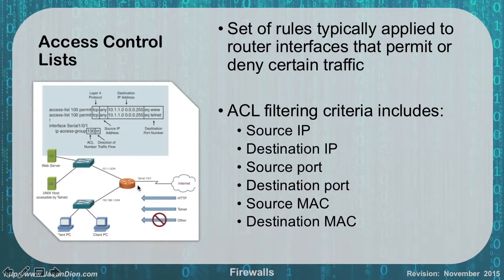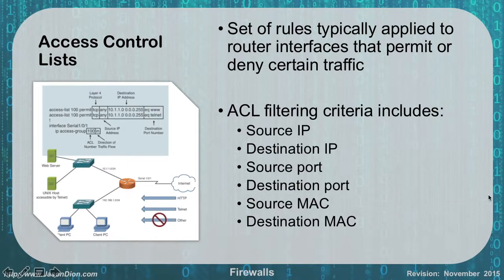So if HTTP traffic is coming in, it can go to the 10.1.1.0 network — the router will allow it that way but will not send it to other networks because that's not permitted. The HTTP traffic can reach the Unix host or the web host. Similarly, Telnet traffic will be allowed to either of those two servers based on the ACL.